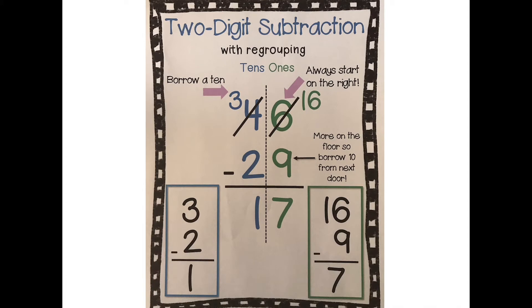Here's a little reminder of the steps when we are trying to subtract with regrouping. The first thing we want to do is always start on the right — never start on the left, always start on the right. So we're going to be starting with 6 take away 9. And then we want to look at the floor, the bottom number here, which is 9 in this case. The trick is: if there's more on the floor, borrow 10 from next door.